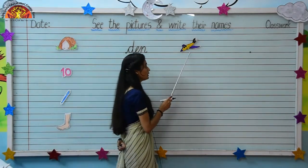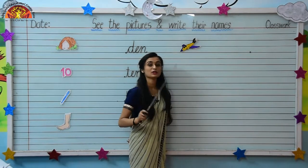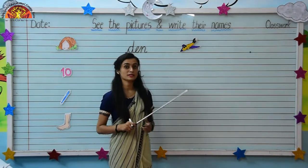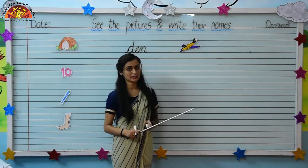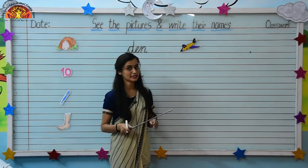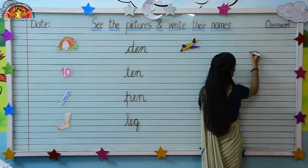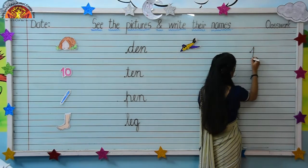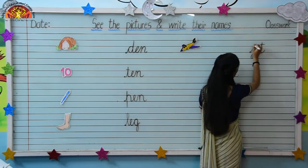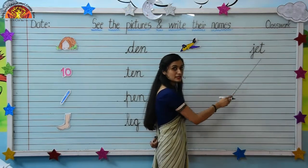Now come to the last one. Which picture is this kids? This is JET. And what is the spelling of JET? The spelling of JET is J-E-T. We will write the spelling of JET over here in front of the picture: J-E-T.